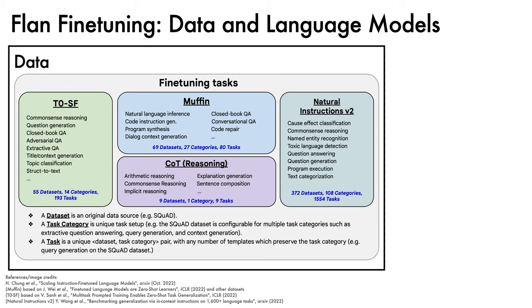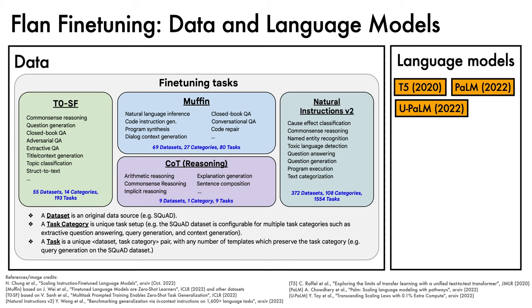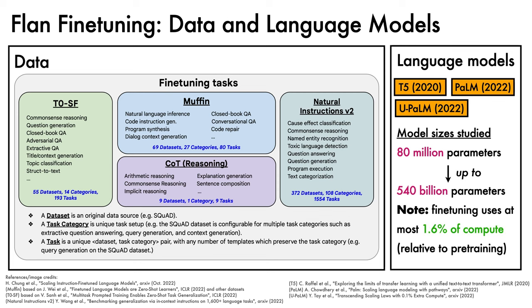The families of language models used in the study include T5, PaLM, and UPaLM. In terms of model sizes under consideration, these range from 80 million parameters up to 540 billion parameters. One further note: fine-tuning is very lightweight relative to pre-training, using at most 1.6% of total compute, and as little as 0.2% for the bigger models.